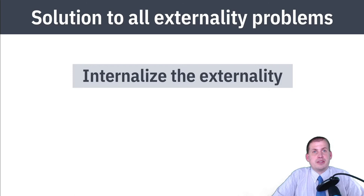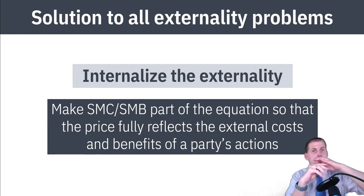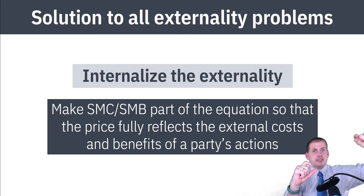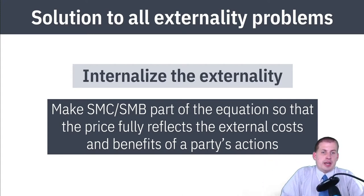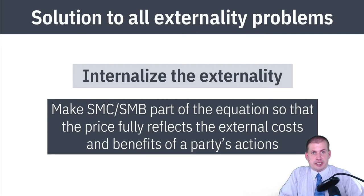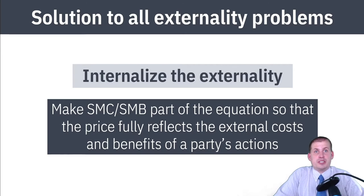The solution to all externality problems is to make it not an externality anymore — to internalize the externality, or make somebody bear the cost of the damage. If we think about the chart where we have a social marginal cost or social marginal benefit that is off from what's currently happening in the market, we want to hit that social marginal level — less pollution or more research — by changing the price of polluting or the price of doing research.